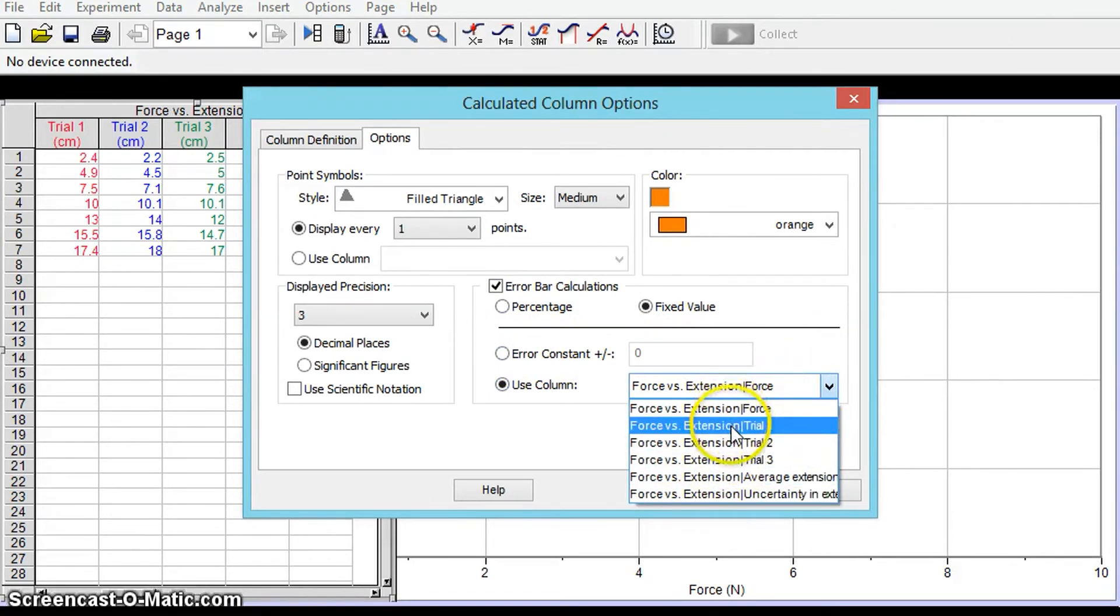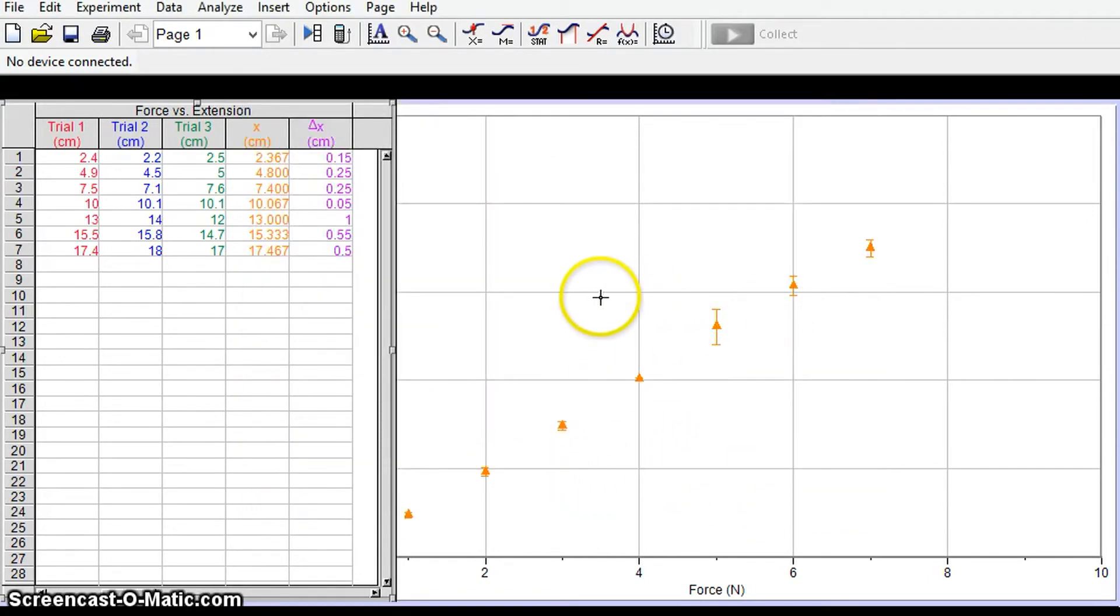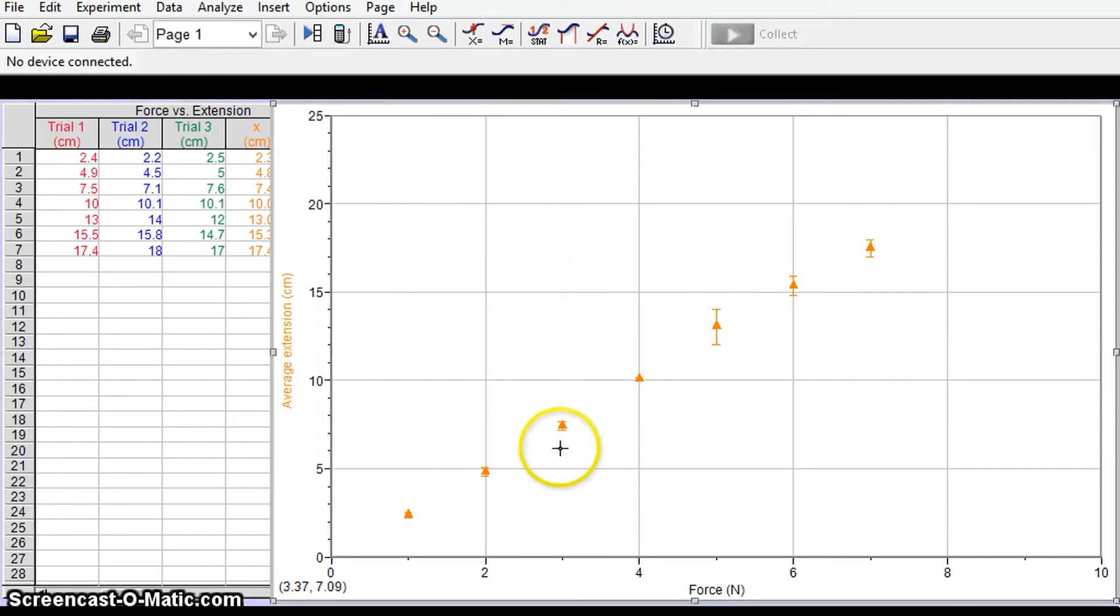And we can choose any column we want but of course we want the uncertainty in the extension down the bottom there, so I'm going to select that hit done and what we can see is that the error bars have been put on and they're different in size.